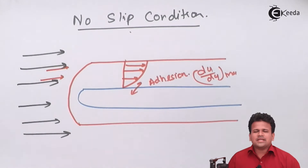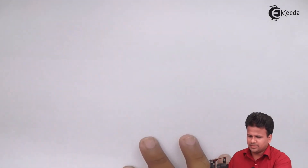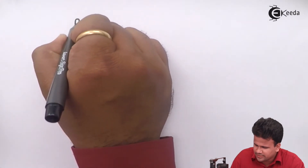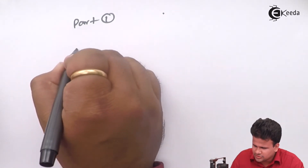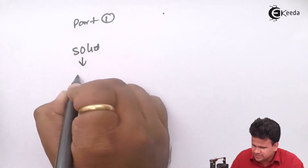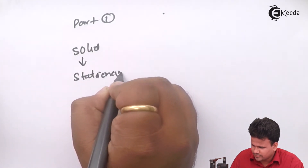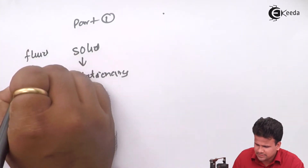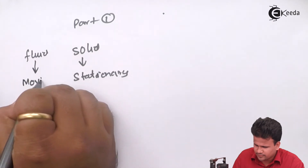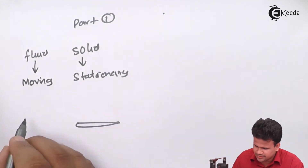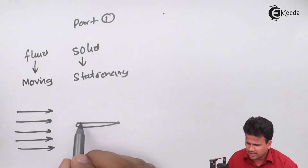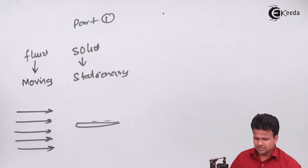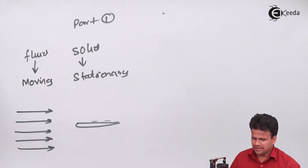The boundary layer can be interpreted in two parts. In Part One, the solid is stationary and the fluid is moving. A small solid body is considered, and the fluid is moving at a very high velocity. The boundary layer will be formed at the surface or in the near vicinity of the entire solid body.